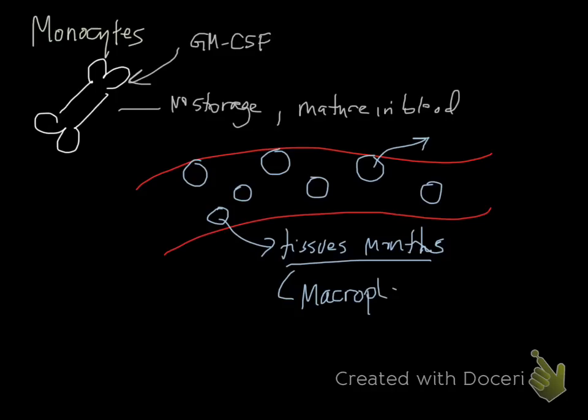In tissues, they phagocytize materials and agents and present them to other inflammatory cells and immune cells such as lymphoid cells. They present antigen to them and deal with various diseases in the body.